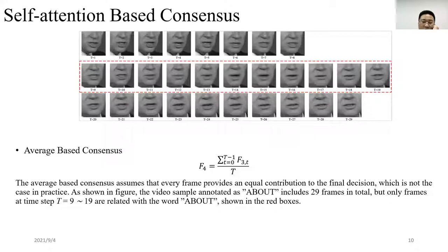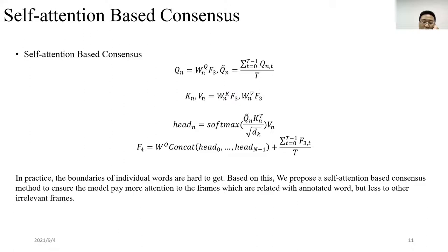The most popular consensus method currently being used is to average over the scores produced at all the time steps. The average based consensus assumes that every frame provides an equal contribution to the final decision, which is often not a good way for the LRW data being used here. As shown in figure, the video samples include 29 frames in total, but the only frames at the timestamp 9 to 20, highlighted in the middle red box, are related to the word. We therefore propose a self-attention based consensus mechanism to ensure the model pays more attention to the frames which are more relevant to the target word, but less to other irrelevant frames.